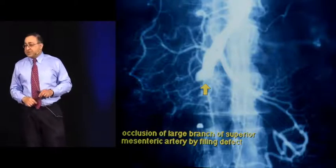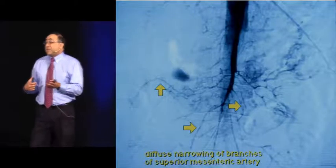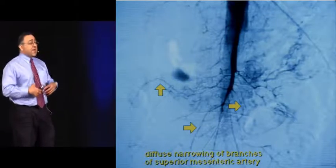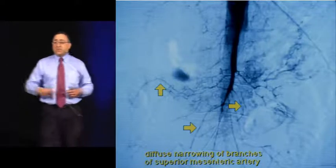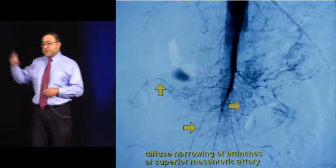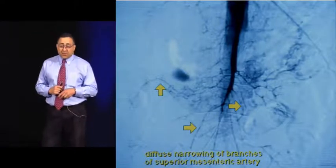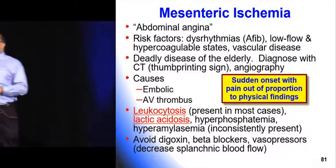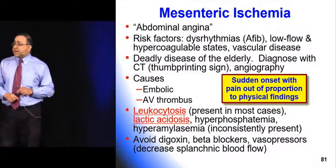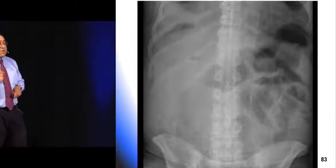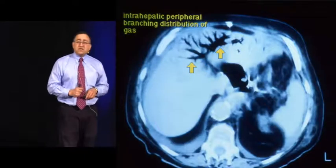Non-occlusive mesenteric ischemia shows diffuse vasoconstriction — the type you might see in a septic patient on a norepinephrine drip who develops severe abdominal pain. Also remember: atrial fibrillation with abdominal pain is mesenteric ischemia until proven otherwise, as is cardiomyopathy with abdominal pain. Digoxin is an independent predictor of mesenteric ischemia because it produces a small amount of splanchnic vasoconstriction — so if a patient on digoxin develops abdominal pain, think mesenteric ischemia.